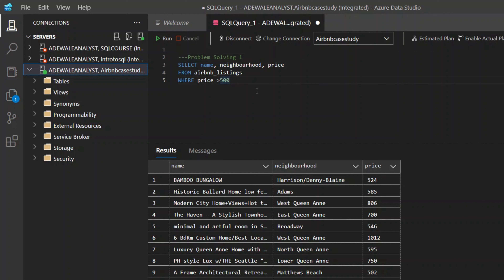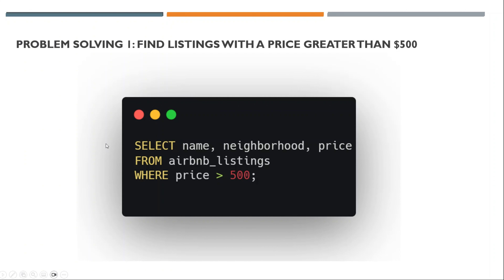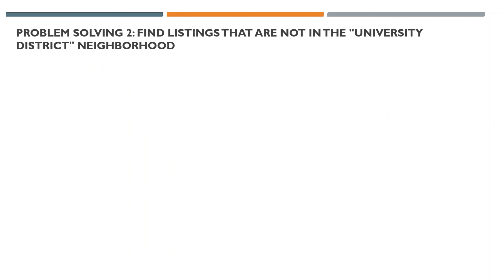Let's go to problem solving number two. We are selecting name, neighborhood, and price. Now let's solve another problem. Problem number two says we should find listings that are not in the University District neighborhood. So we want to exclude all University Districts.